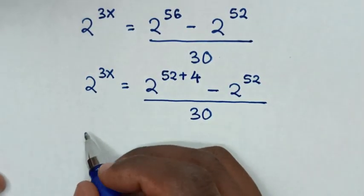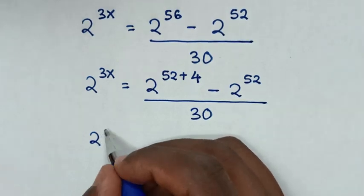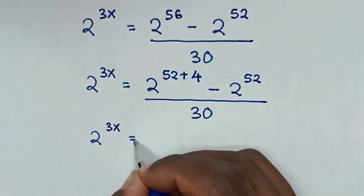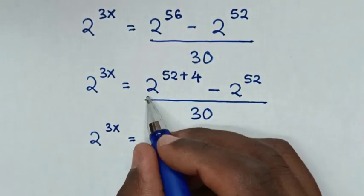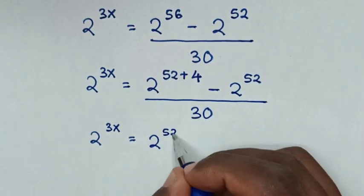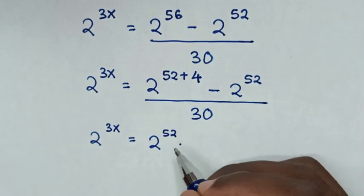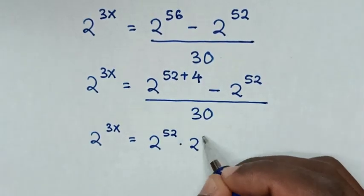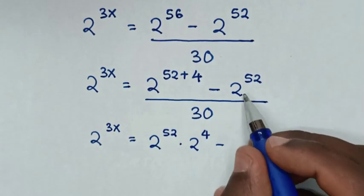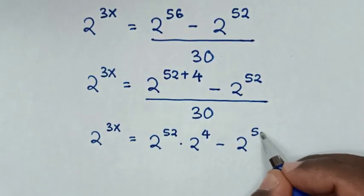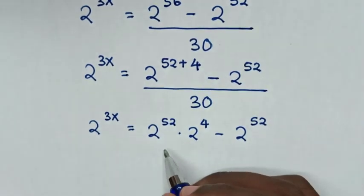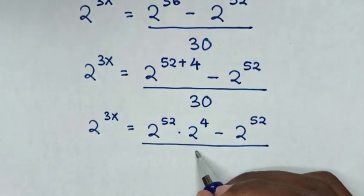In the next step, it will be 2 power of 3x is equal to 2 power of 52, then times 2 power of 4, then minus this 2 power of 52, then over 30.